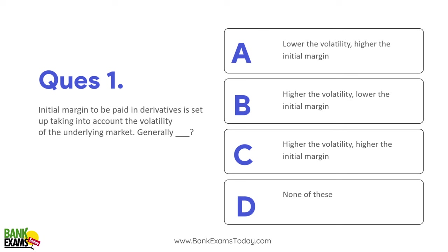Question 1: Initial margin to be paid in derivatives is set up taking into account the volatility of the underlying market. जो initial margin है वो volatility पे depend करता है — जितनी market में volatility ज्यादा है, risk ज्यादा है, उतना initial margin ज्यादा होगा।